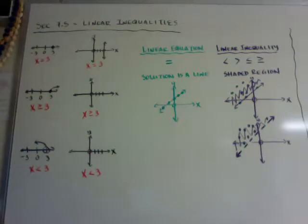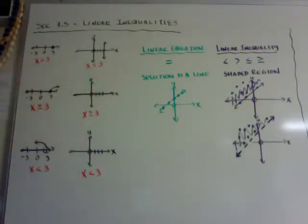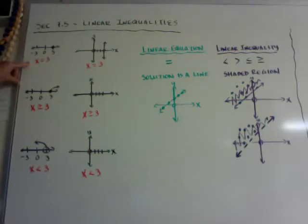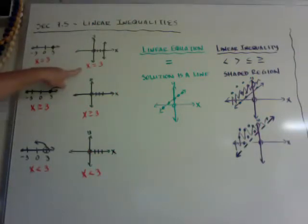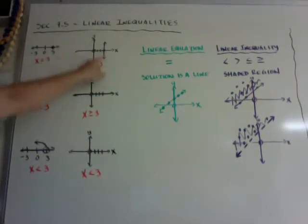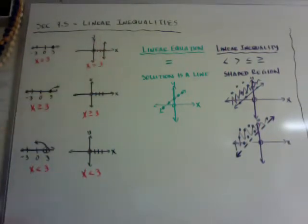Here are some examples as a progression. If you remember, when we said graph x equals 3, you just put a dot on 3 on a line graph. On a two-dimensional graph, if I said graph x equals 3, it was a vertical line on x equals 3. That's the x-intercept, and it's a vertical line.